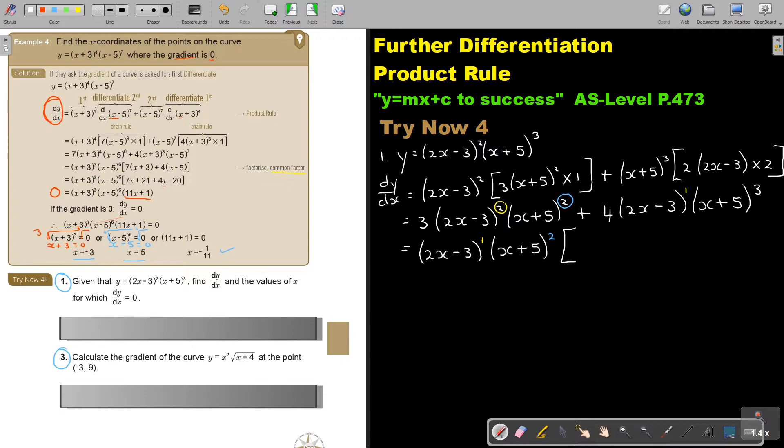Basically I'm just going to, if I divide, the 3 will be left and one of these brackets, 2x minus 3. And there the 4 will be left. This cancel, and one of these brackets, x plus 5. And if I simplify this now, it's 2x minus 3, x plus 5 square. And this is going to be 6x minus 9 plus 4x plus 20. Close the bracket.